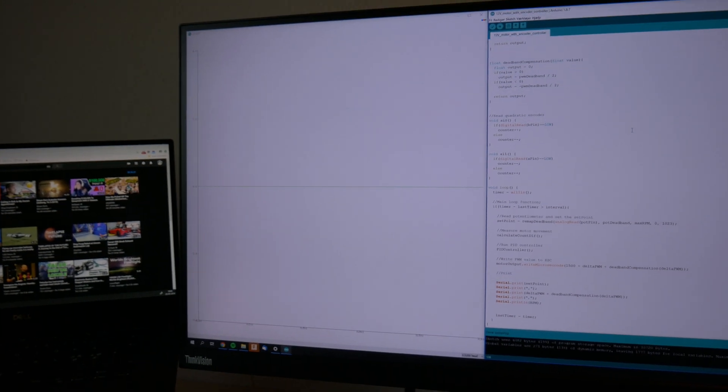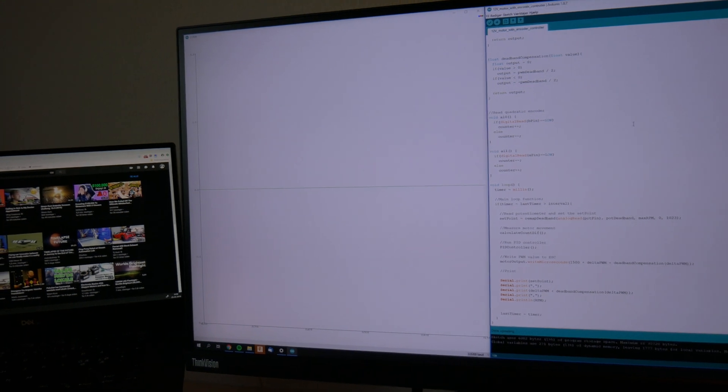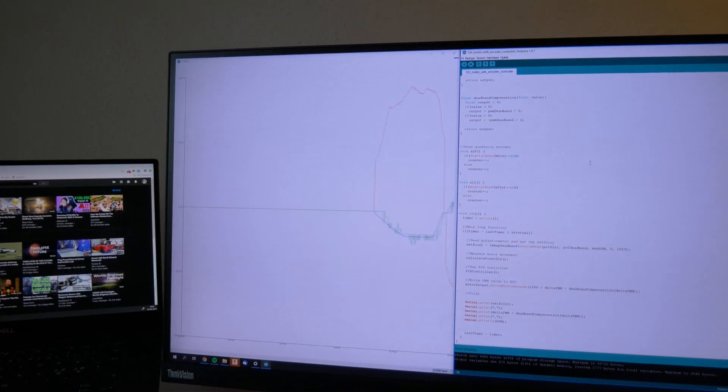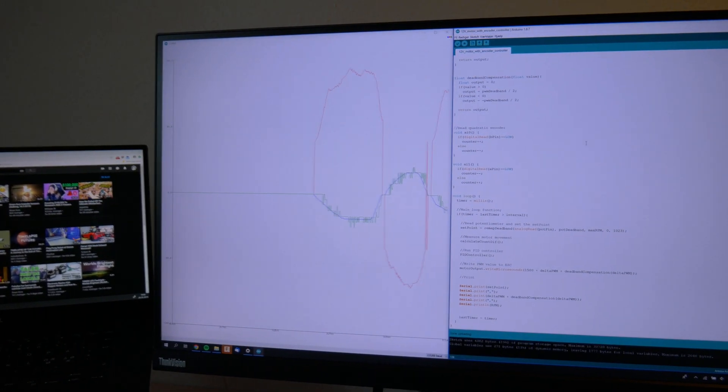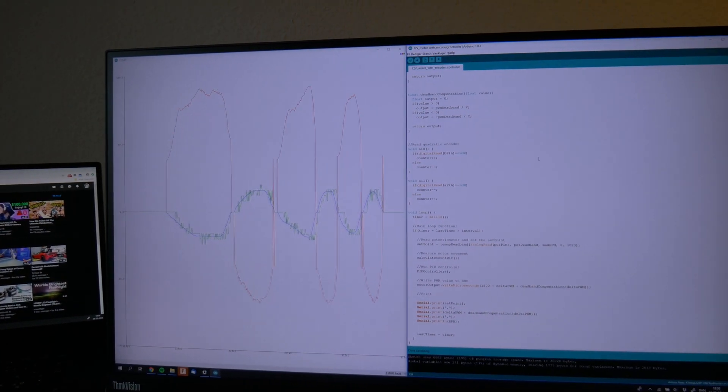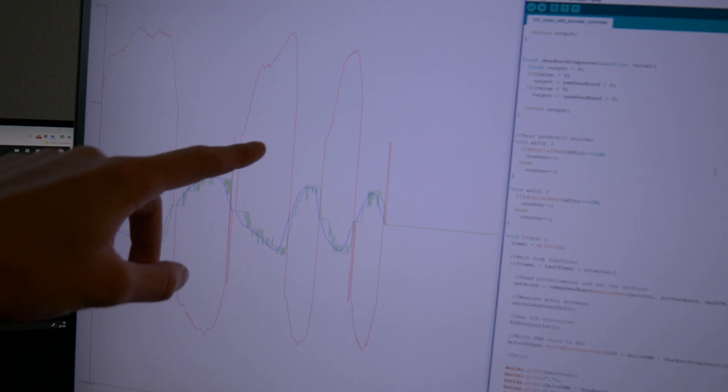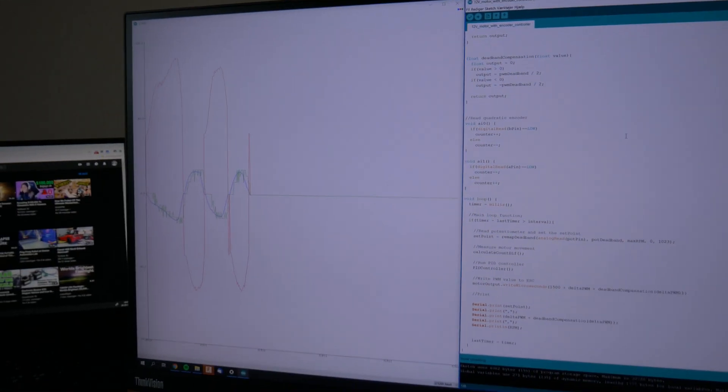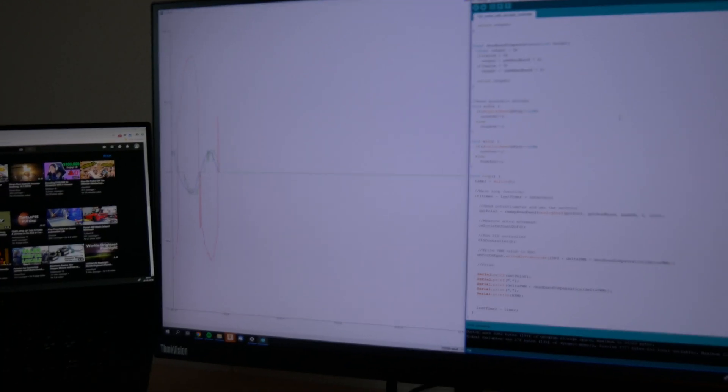I have now written some code that does the dead band compensation. And as you can see, as I change direction, it has a very sharp drop, which is basically the system that's skipping the middle frequencies.